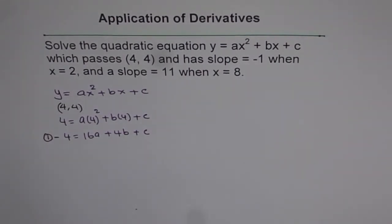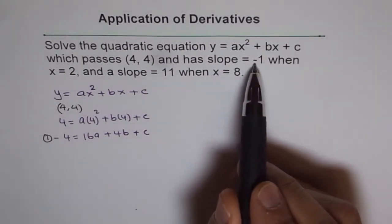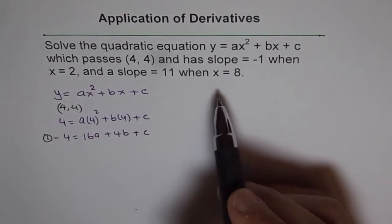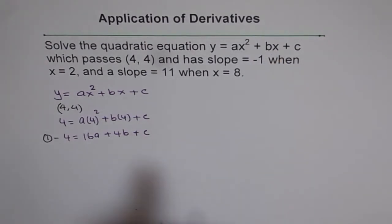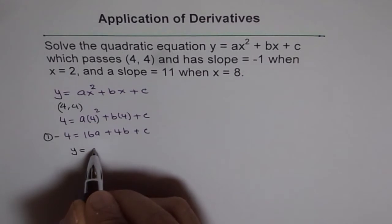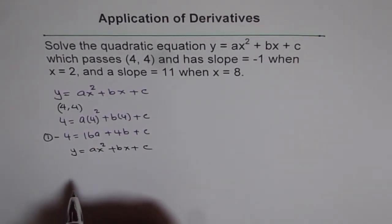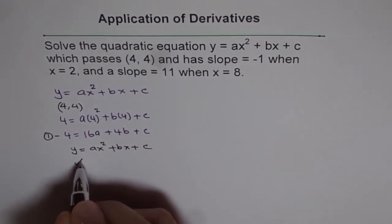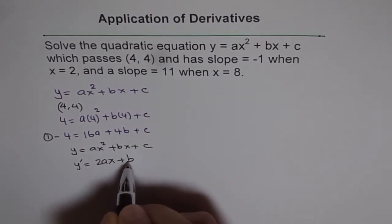To get the second equation, we will use the condition that slope is minus 1 when x is 2. To find the slope, we first write the derivative of the equation. Our equation is y equals ax squared plus bx plus c. The derivative dy/dx, or y dash, equals 2ax plus b. That is the derivative of this equation.